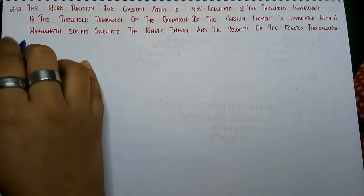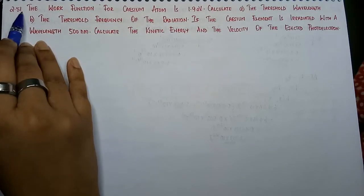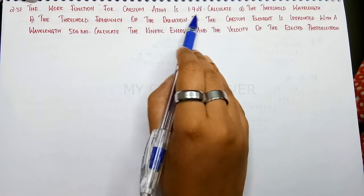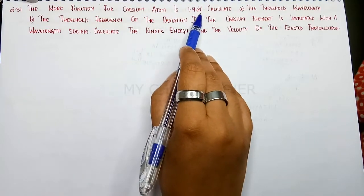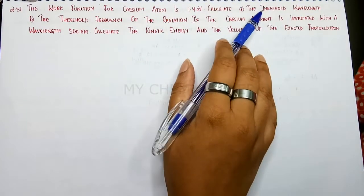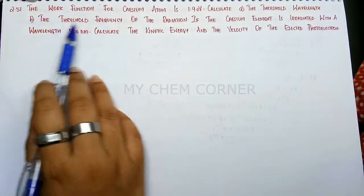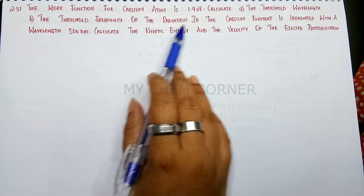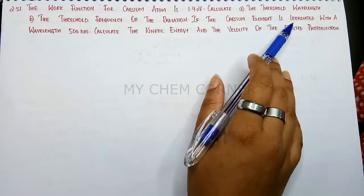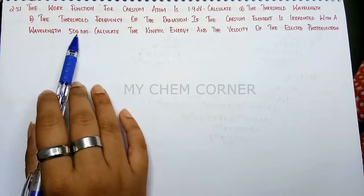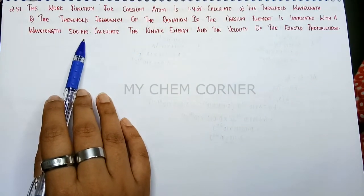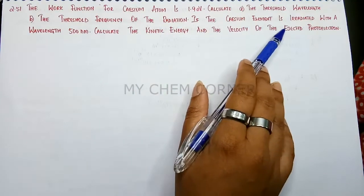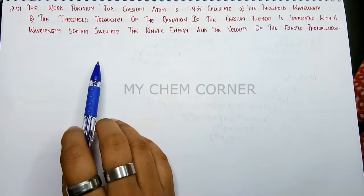Question 2.51: The work function for cesium atom is 1.9 electron volt. Calculate the threshold wavelength and threshold frequency of the radiation. If the cesium element is irradiated with a wavelength of 500 nanometers, calculate the kinetic energy and velocity of the ejected photoelectron.